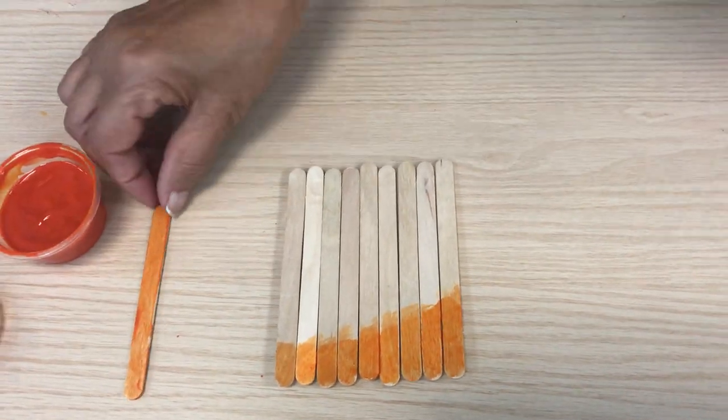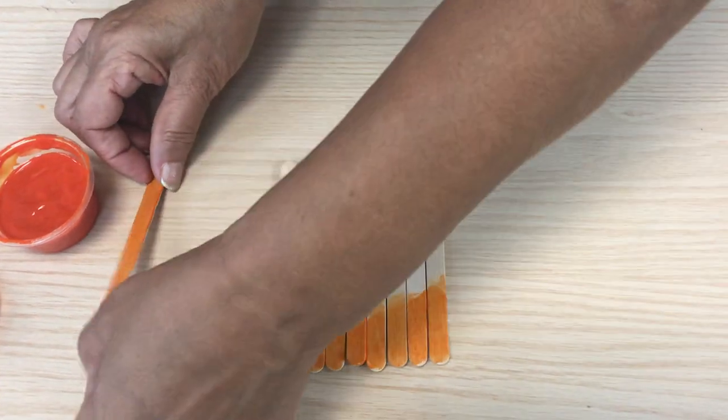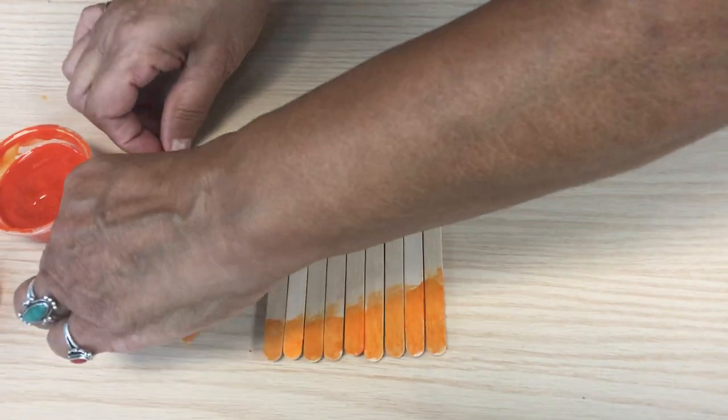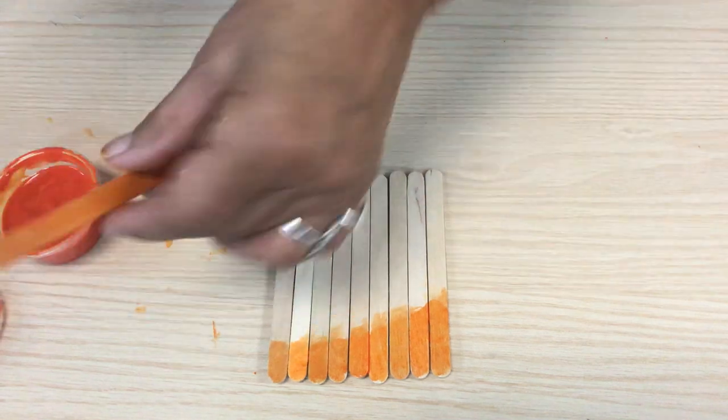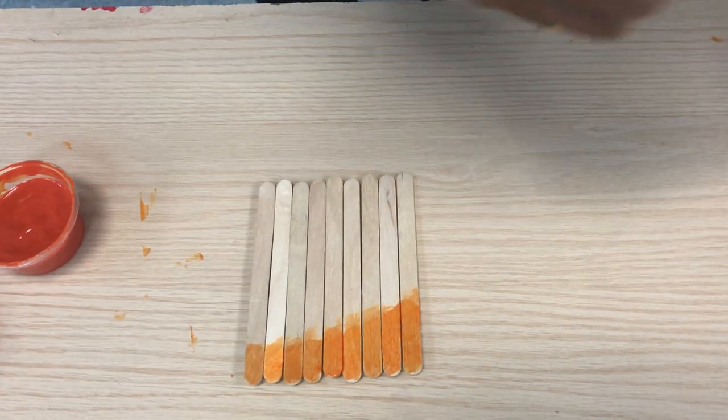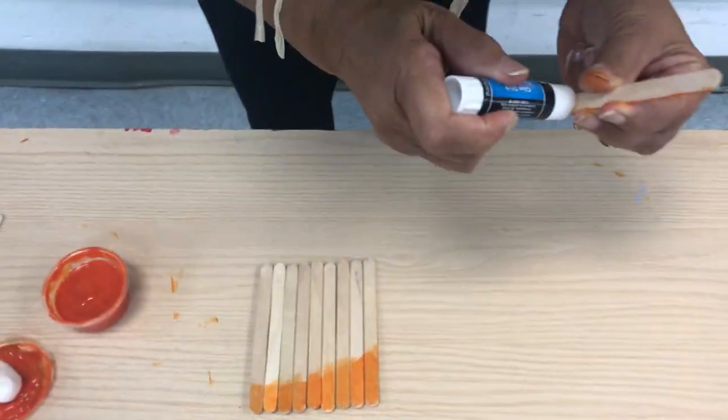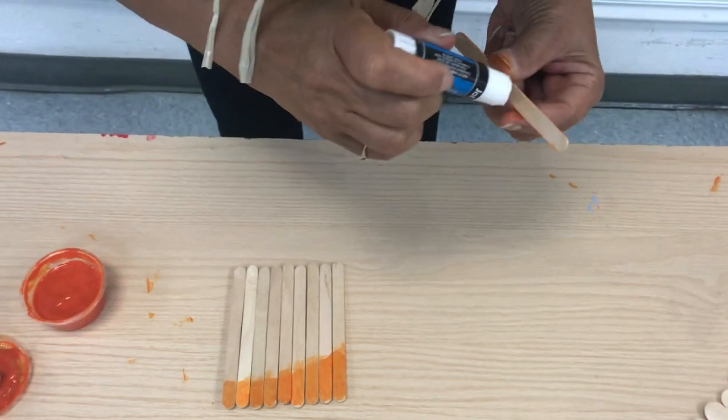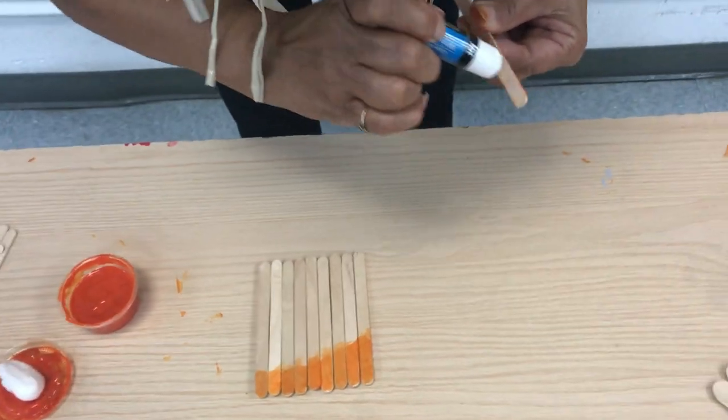Once your popsicle stick is dry, you take it and you put glue stick on the back side of it. Ya que se secó la pintura, vamos a pegar el palito que pintamos de anaranjado.